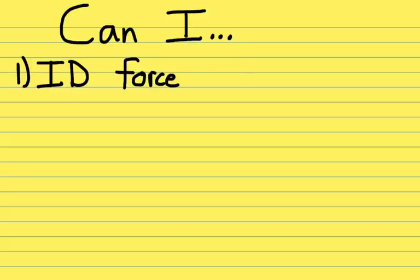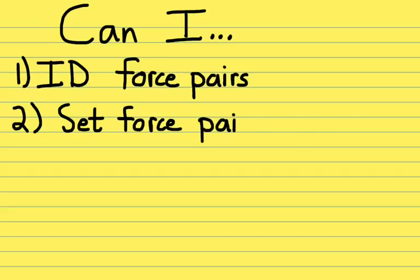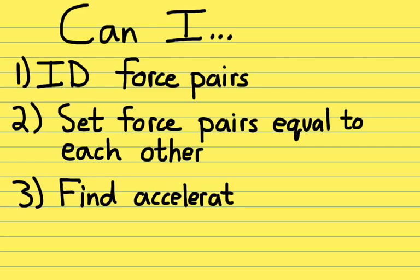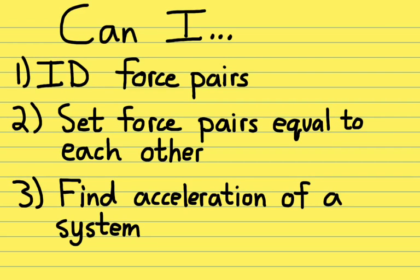Here's a list of the things we need to be able to do using Newton's Third Law: first, identify force pairs between objects — if you push on something, identify the reaction force; second, set force pairs equal to each other and recognize they give you the same number of newtons; and third, eliminate internal forces to find the acceleration of a system. Those are the three things we need to be able to do by next class. That's the end of this video — I'll see you then. Ta-ta.